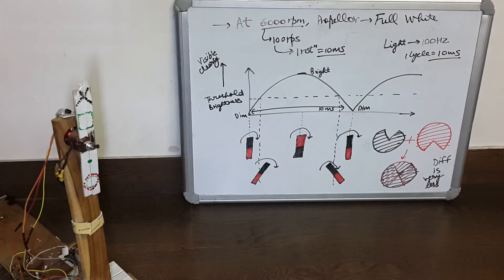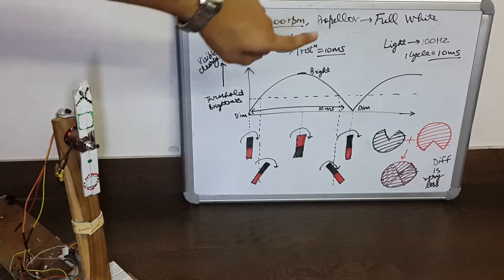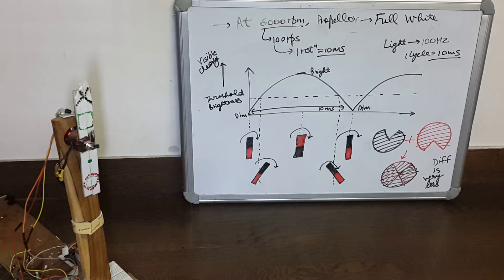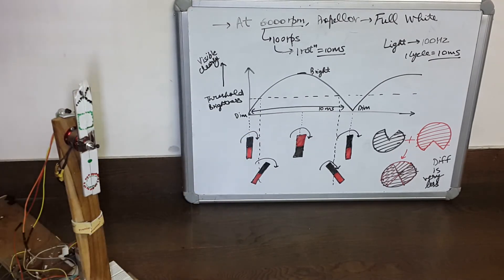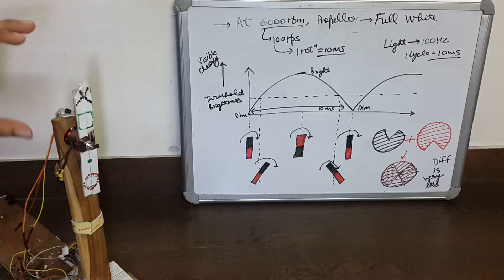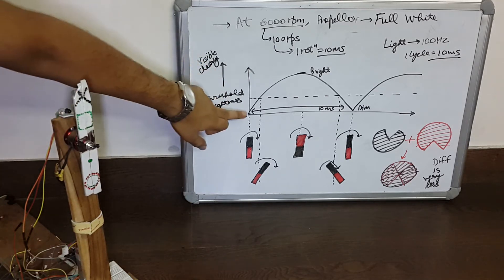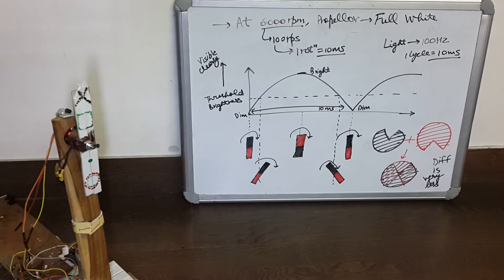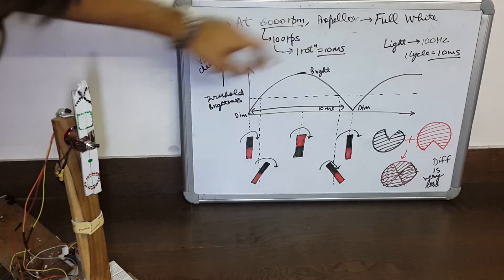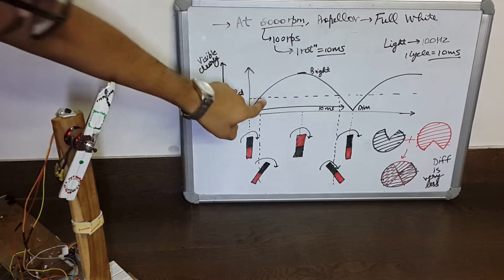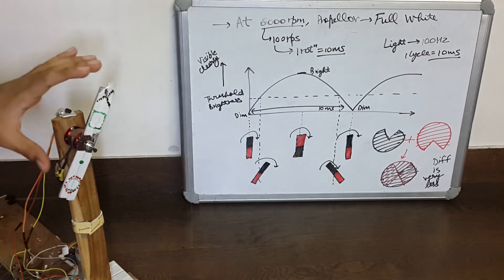If we have a propeller rotating at 6000 RPM, one rotation would be 10 milliseconds, and the light would still be blinking at 100 Hz, so one cycle would also be 10 milliseconds. The time the propeller takes to complete one rotation is the same as the time for one cycle of light. If we assume the propeller is in this position at t = 0 when the light was dim, in the time that the brightness increases above the threshold, the propeller moves to a new position and we continue to see it.